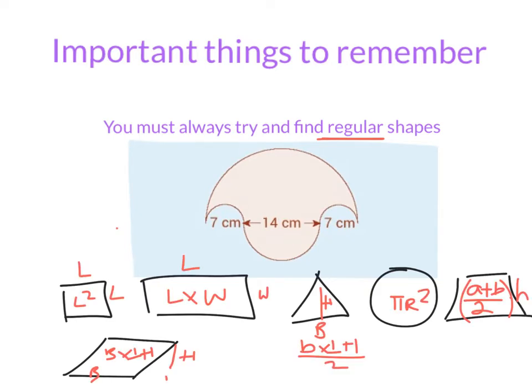Just so we can remember a few of them: we have L squared, length by width, triangle is half base by perpendicular height, area of a circle is pi r squared, trapezium is a plus b divided by 2 times h (that's in your log tables), and then parallelogram is base times perpendicular height. We're constantly looking to see if we can spot any of these in our questions.